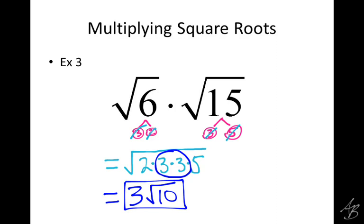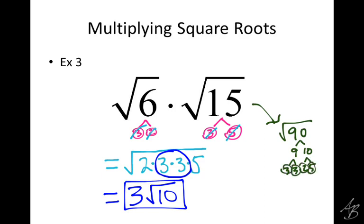We could also do this problem by multiplying six times fifteen first, which is ninety. Then factor ninety into nine times ten, then three times three and two times five. You'll notice that after the factor tree, we have all the same factors as before. So instead of multiplying together and then factoring, we factor first and put them all together — it saves us a step.